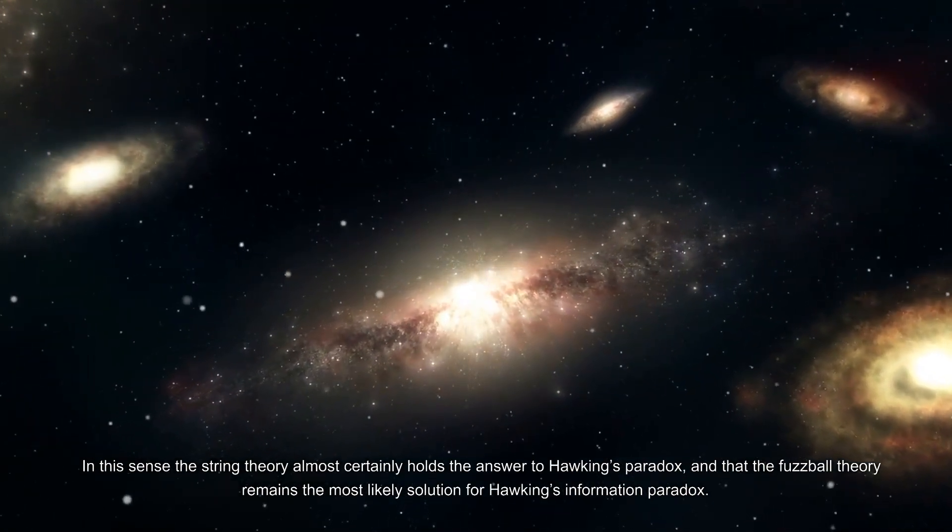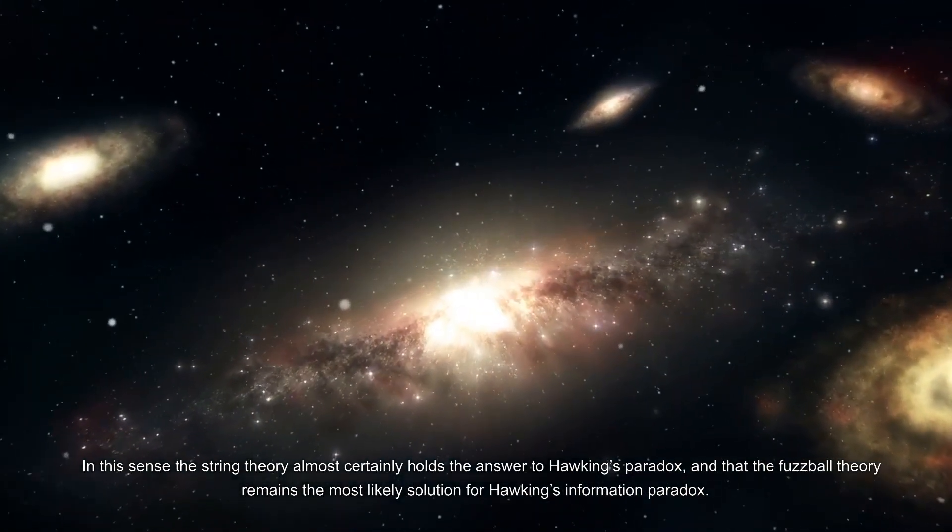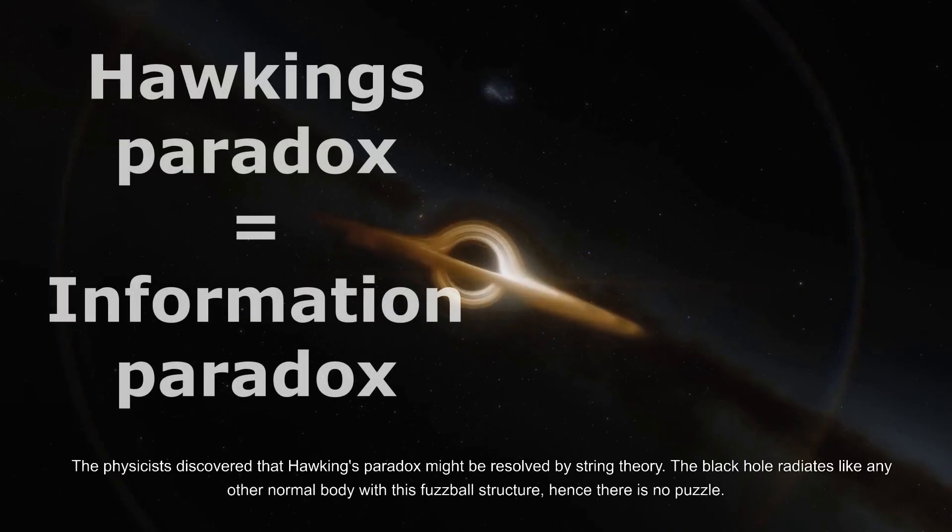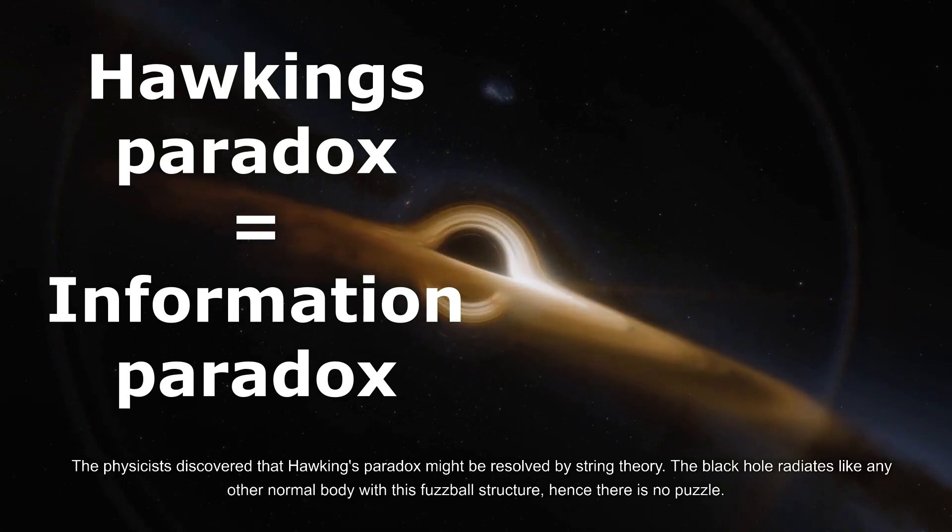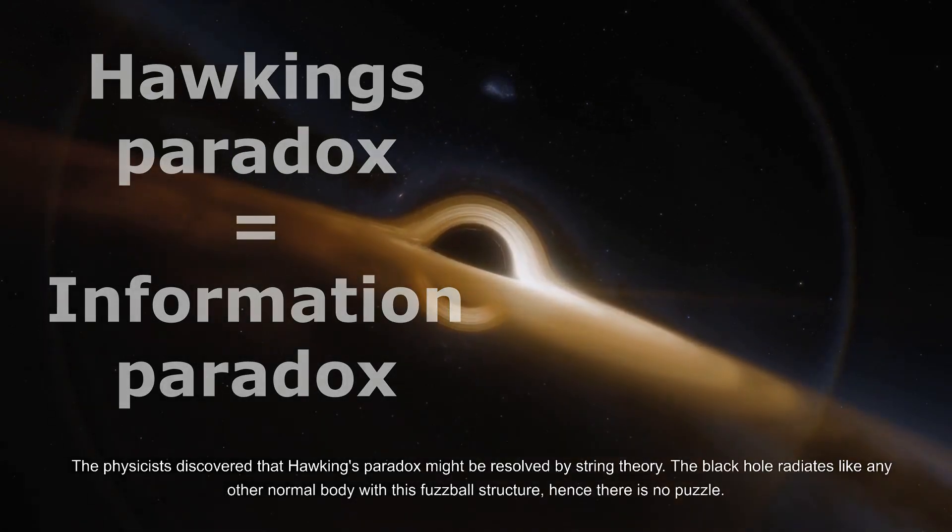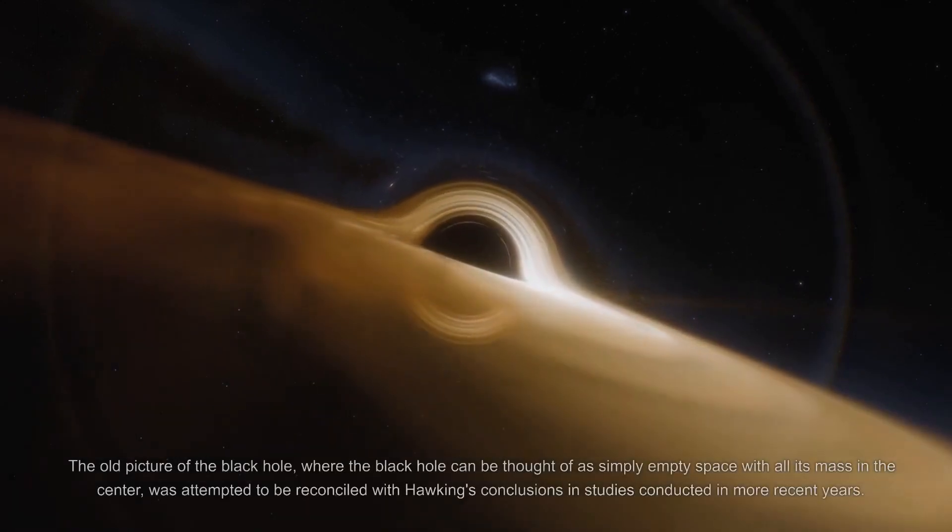In this sense, string theory almost certainly holds the answer to Hawking's paradox, and the fuzzball theory remains the most likely solution for Hawking's information paradox. The physicists discovered that Hawking's paradox might be resolved by string theory. The black hole radiates like any other normal body with this fuzzball structure, hence there is no puzzle.